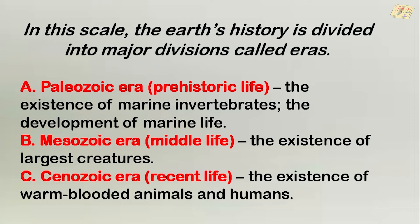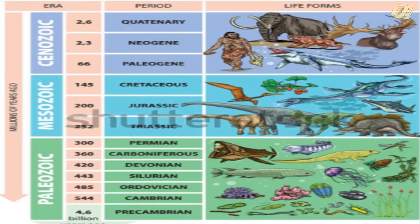The eras are: Paleozoic era, or prehistoric life — characterized by the existence of marine invertebrates and the development of marine life. Mesozoic era, or middle life — the existence of the largest creatures. Cenozoic era, or recent life — the existence of warm-blooded animals and humans. Here is an example of the geological timescale showing the Paleozoic, Mesozoic, and Cenozoic eras with examples of different life forms.